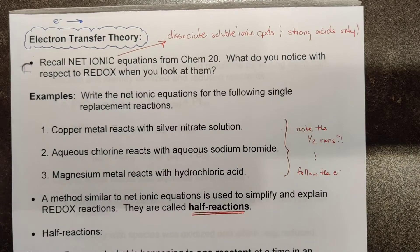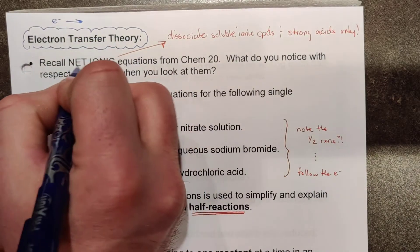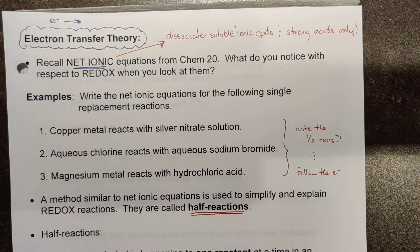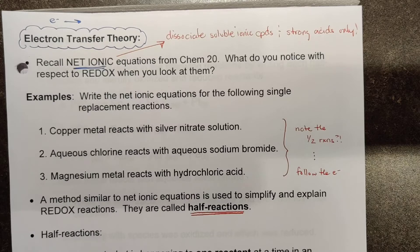We did something like this in the past, and so what I'll get you to think about is those net ionic equations that we were doing in Chemistry 20. And this can kind of highlight for us what's ultimately going on in our electrochemical reactions.